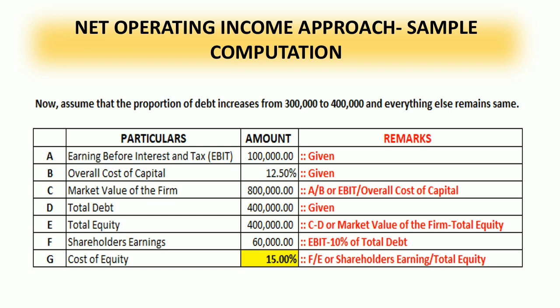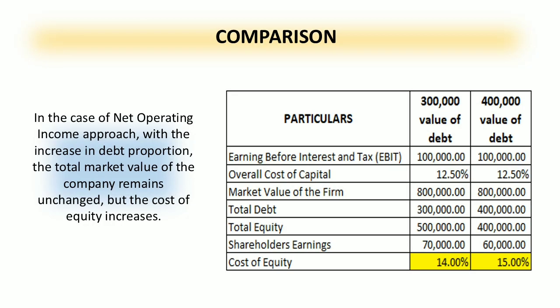Now let's assume the proportion of debt increases from 300,000 to 400,000, with everything else remaining constant. We change item (d), total debt, from 300,000 to 400,000 and follow the same computation procedure. This time we get a cost of equity of 15% — higher than the 14% computed using 300,000 as debt. Looking at the comparison table, in the Net Operating Income Approach, with an increase in debt proportion, the total market value of the company remains unchanged, but the cost of equity increases.